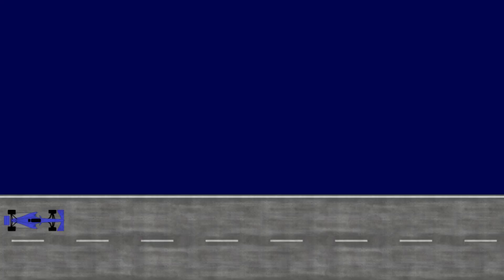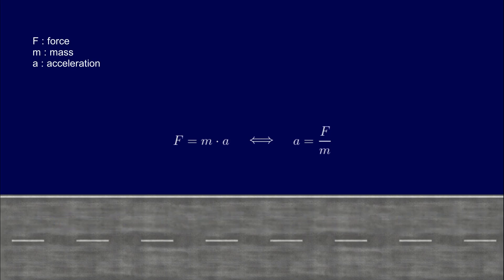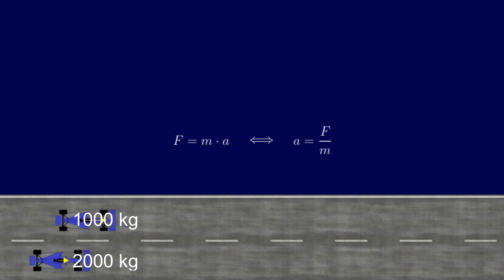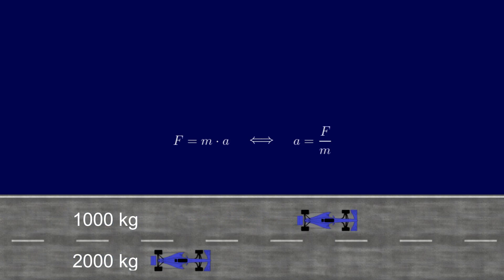If a car accelerates on a flat road, it is solely due to the force produced by its engine. Newton's second law simply reflects the fact that the acceleration of an object experiencing a force F is proportional to this force F. However, the larger the mass of the object, the smaller the acceleration. In this animation, the yellow vector represents the acceleration of the car. The car at the bottom of the screen has a mass twice as large; therefore, its acceleration is two times smaller. The same reasoning applies to the braking phase, since braking is nothing more than a negative acceleration.